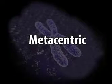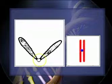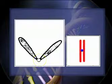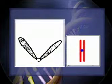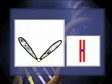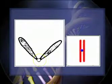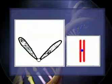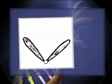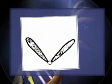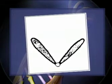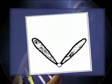Metacentric chromosomes: when the centromere lies at or near the middle of the chromosome and the two arms are almost equal, it is called metacentric. During anaphase movement, the chromosomes bend at the centromere so that metacentric chromosomes appear V-shaped.